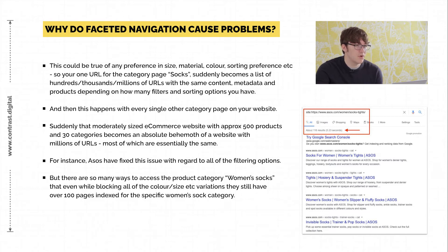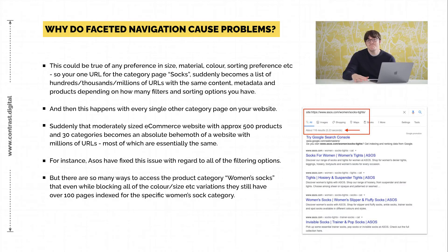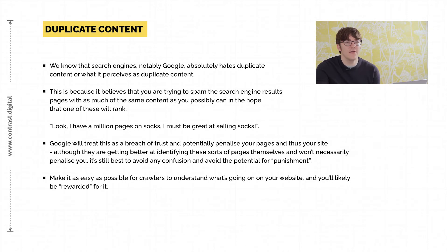We need to put a solution in place to fix these issues, because having all these filter options indexed is not good for your e-commerce site. There are going to be thousands of ways for people to find these pages. Yes, we could look at blocking some faceted searches from the robots.txt — like colour and size — but there are still going to be lots of other options, so that's not actually going to fix the issue and we'll have to look at doing it differently.